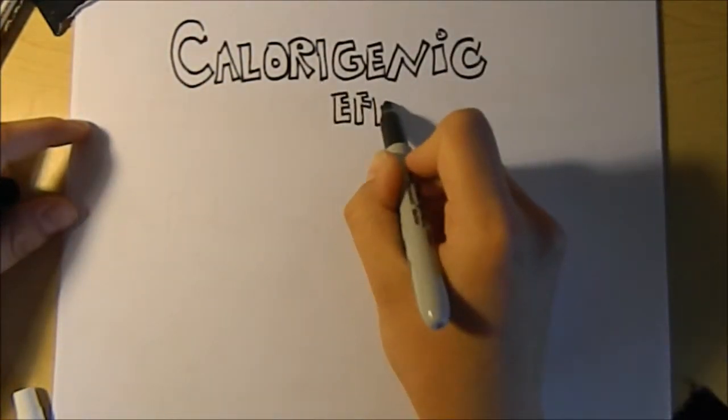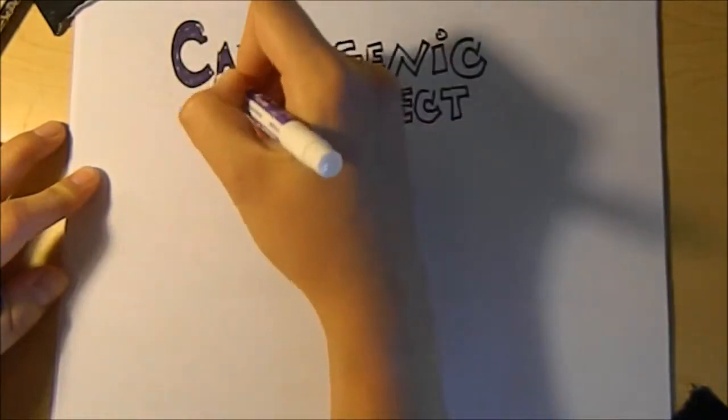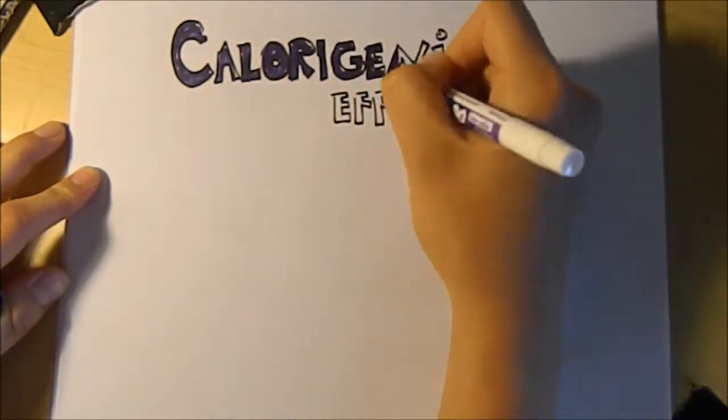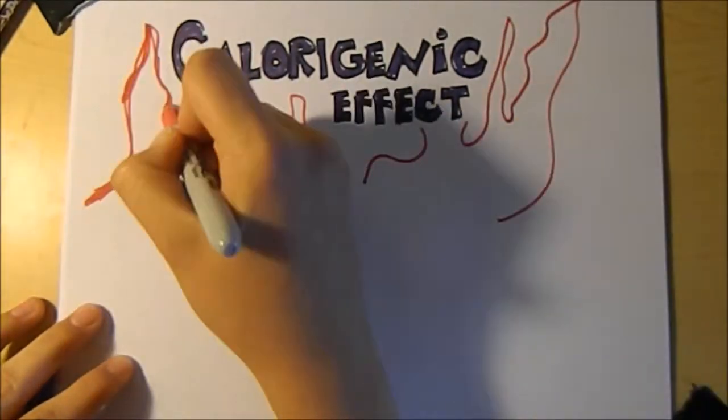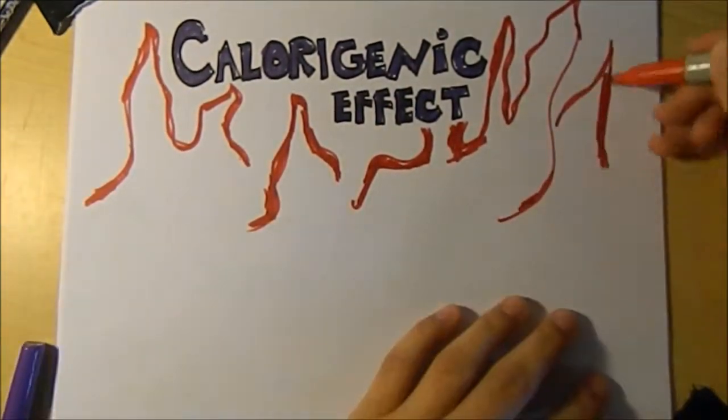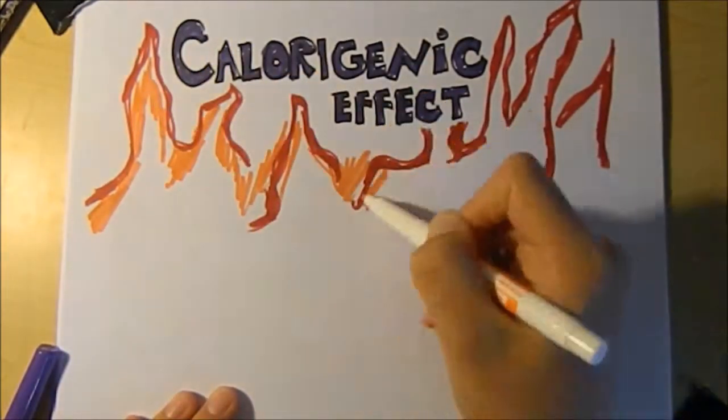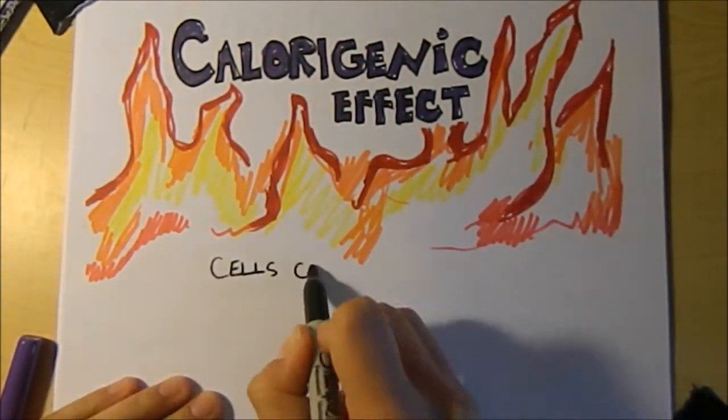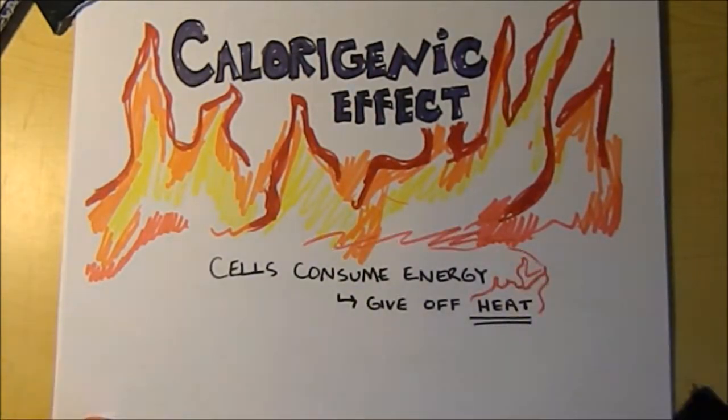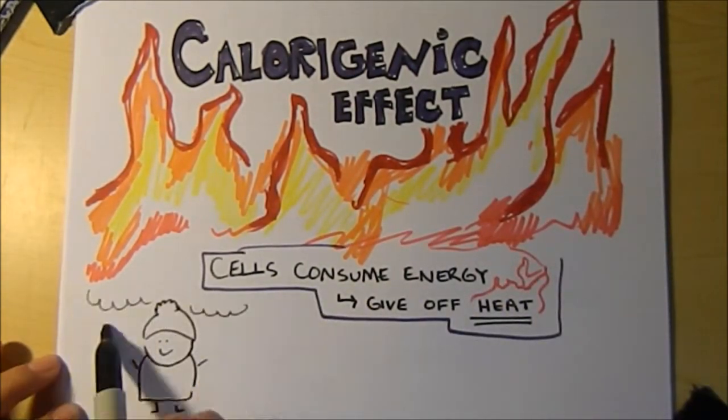Thyroid hormone also causes an effect known as the calorogenic effect. Because of all the ATP made by the mitochondria and glycolysis, the cells in our body consume more energy. This generates a plethora of heat. This phenomenon is what keeps children warm when it gets cold outside.